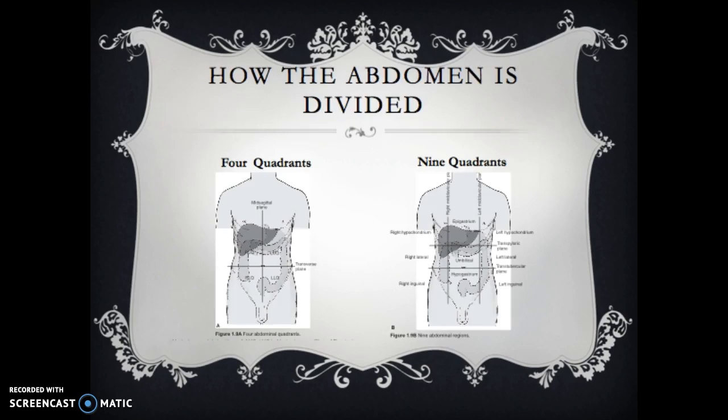When we look at the abdomen it's divided into four nine quadrants, normally we call this nine regions just to keep it simple. Within your four quadrants you have your upper and lower halves: right upper quadrant, left upper quadrant, right lower quadrant and left lower quadrant, and then you have your nine regions.